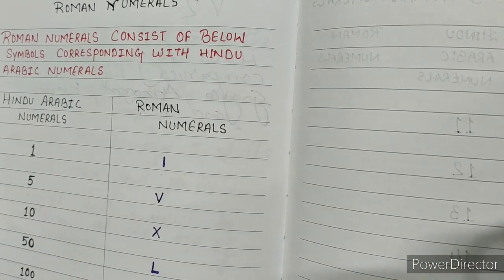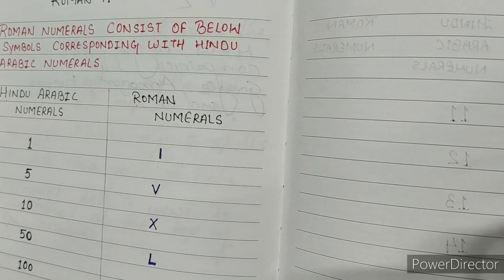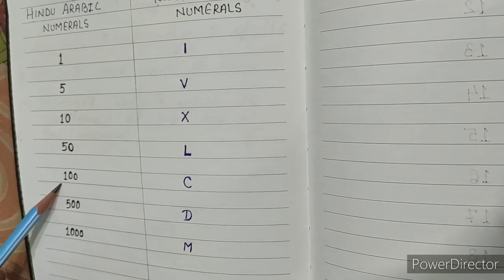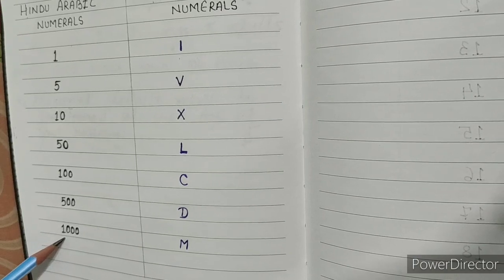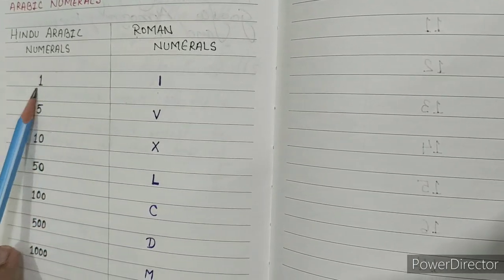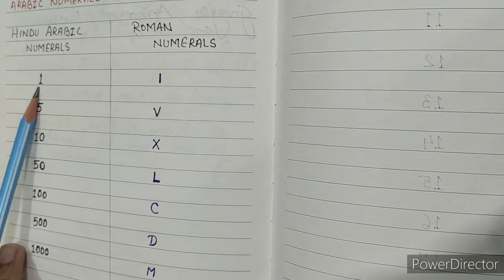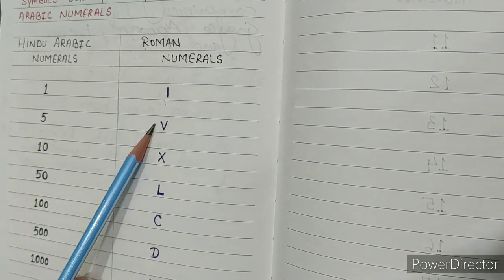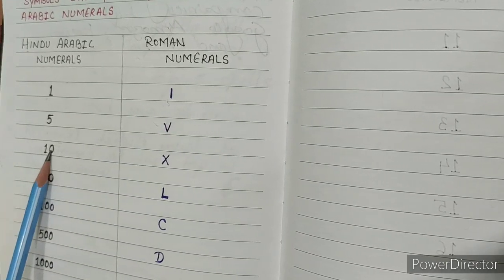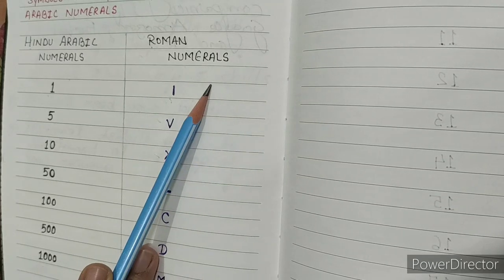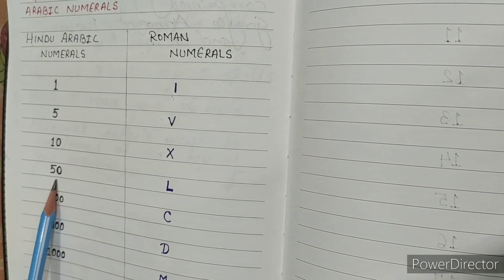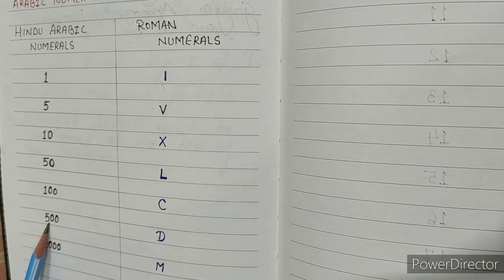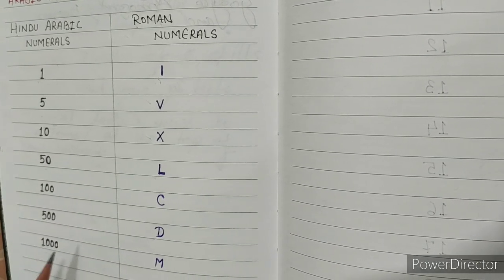Roman numerals consist of the following symbols corresponding with Hindu-Arabic numerals. The Hindu-Arabic numerals 1, 5, 10, 50, 100, 500, and 1000 are represented in Roman numerals as I, V, X, L, C, D, and M respectively.